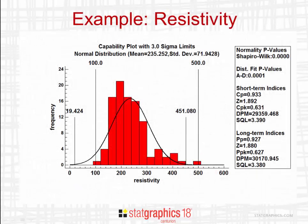As an example, you see here an analysis of the resistivity of 100 silicon wafers. The histogram shows the observed data. The mean of the data is 235.252, and the standard deviation is 71.9428. Superimposed on the histogram is a normal distribution with the same mean and standard deviation as the data. The taller vertical lines show the specification limits, and the spec ranges from 100 to 500.